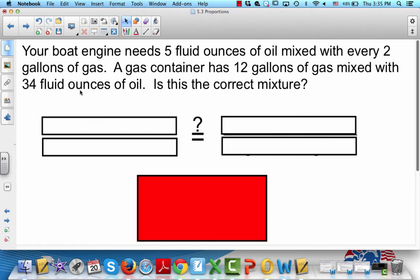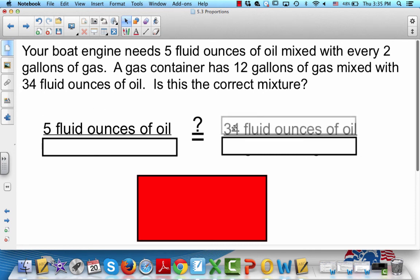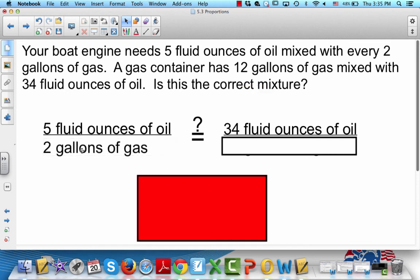So let's write it out. See what we've got here. 5 fluid ounces of oil - if you put fluid ounces on the top on this side, you've got to put fluid ounces on the top on this side. So the 34 goes on top. It has 12 gallons - 5 fluid ounces with 2 gallons. So we put the 2 gallons on the bottom. If we put gallons on the bottom here, we've got to put the 12 gallons on the bottom here.